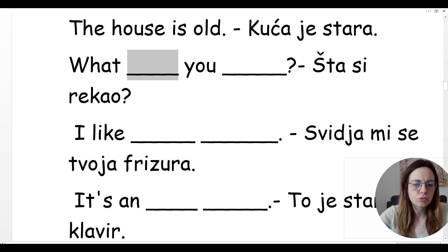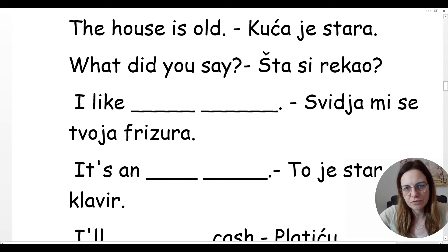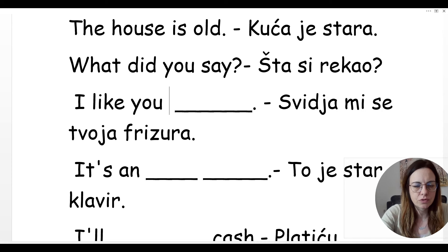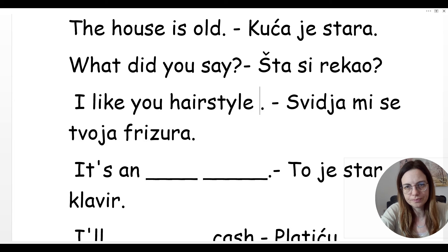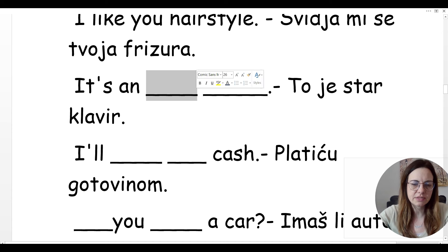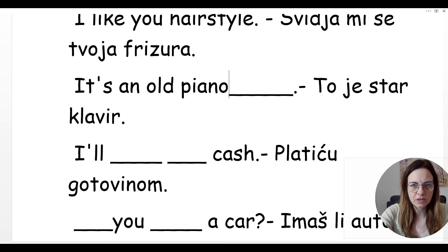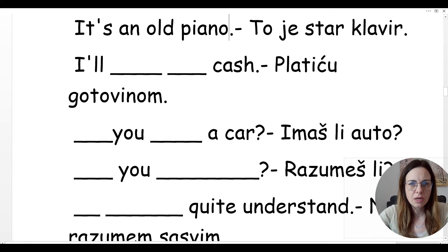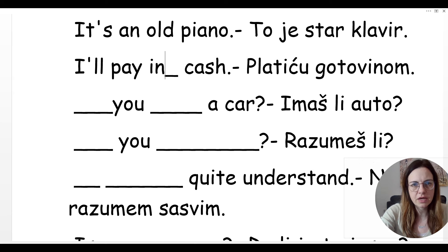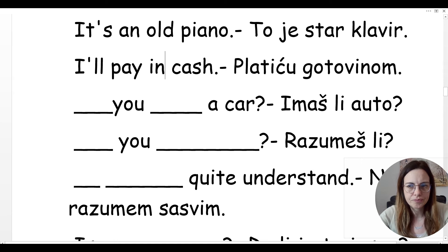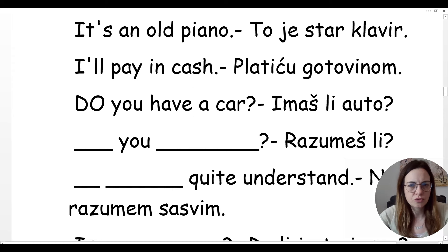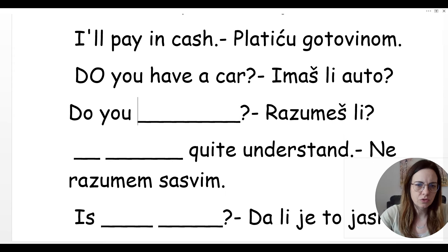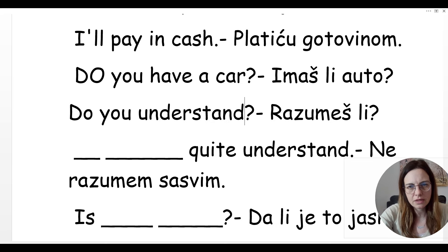Šta si rekla? Moram koristiti past simple — what did you say? Or what have you said? Sviđa mi se tvoja frizura — I like your hair, I like your hairstyle, I like your hairdo. To je stari klavir — it's an old piano. Platiću gotovinom — I'll pay in cash. Imaš li auto? Do you have a car? Razumeš li? Do you understand?